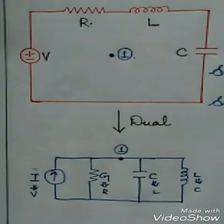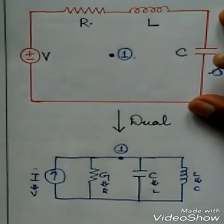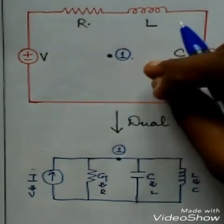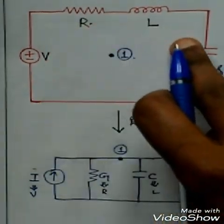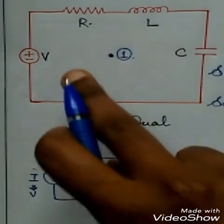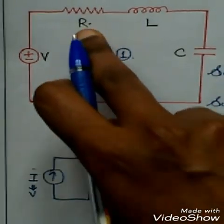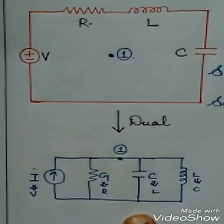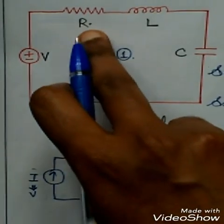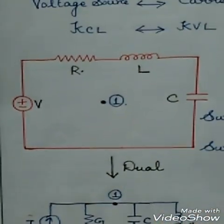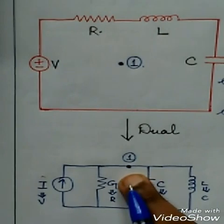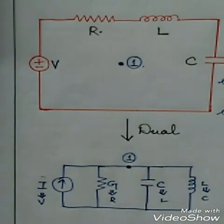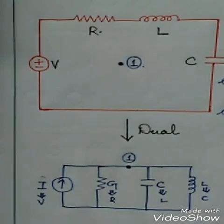This is the dual network: I equals V, and G equals R as the dual term. C is the dual term of L, and L is the dual term of C. This is the shortcut way to convert a particular network into its dual network within a fraction of a second. First identify how many meshes there are, convert those meshes into nodes, find how many elements are there in each mesh, and if they are connected in series, mark them in parallel. Find the dual term of each individual element and connect it to that particular node in parallel.